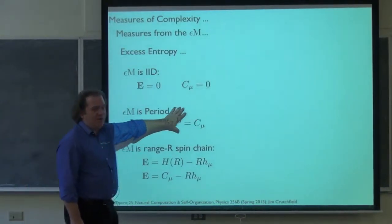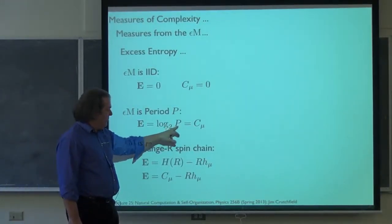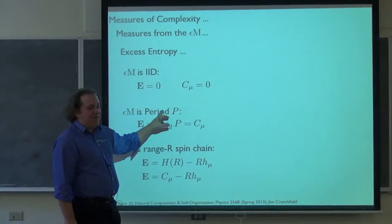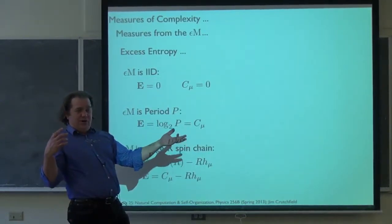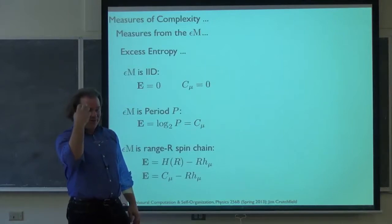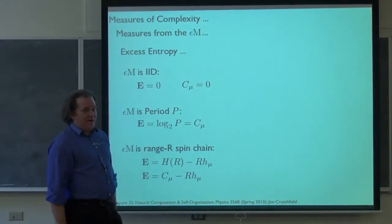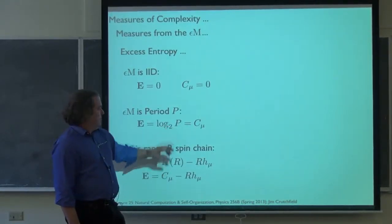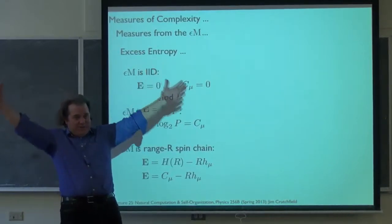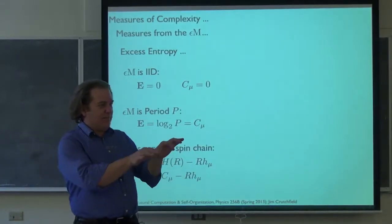The other simple case we talked about were periodic processes. We argued that the excess entropy was log of the period. What kind of information is this? It's the phase information. If I have some period-P process, the architecture of the recurrent causal states is just a big chain with P of those. So these are all causal states — uniform probability — so log of equally likely P events is log of P. For periodic processes and IID processes — completely predictable and completely unpredictable, the two extremes — these two quantities are the same. Stored information equals past-future mutual information.